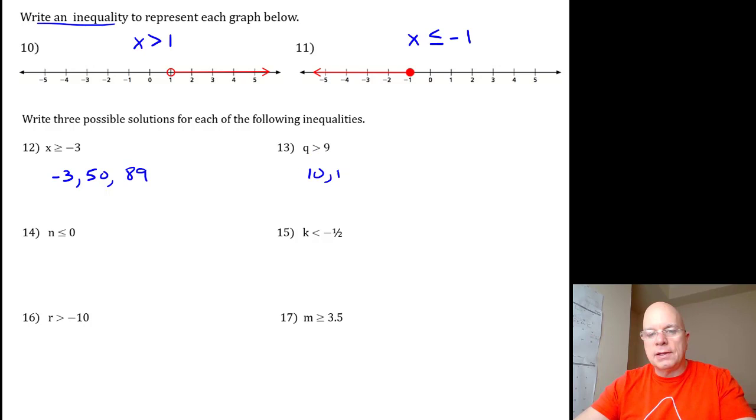Q is greater than 9. How about 10, 11, 12, or 9.3, 9.4, 9.5? As long as it's 3 values to the right of 9, and you should not have included 9 on this one, then you've got it right.